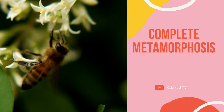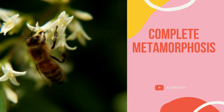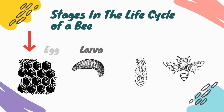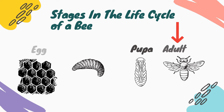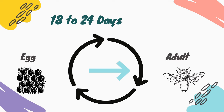Bees undergo a complete metamorphosis, meaning their life cycle goes through four distinct stages: Egg, Larva, Pupa, and Adult. The development from egg to adult lasts from between 18 to 24 days, depending on if the outcome is a worker, queen, or drone.